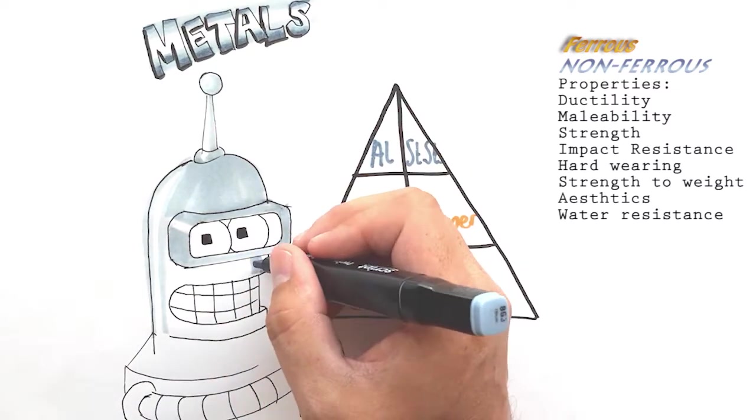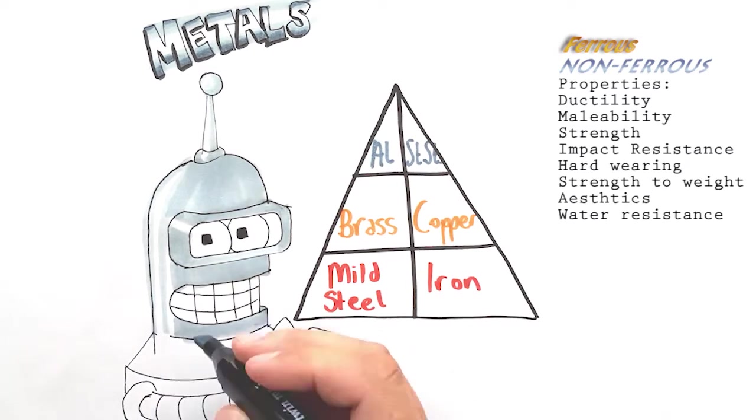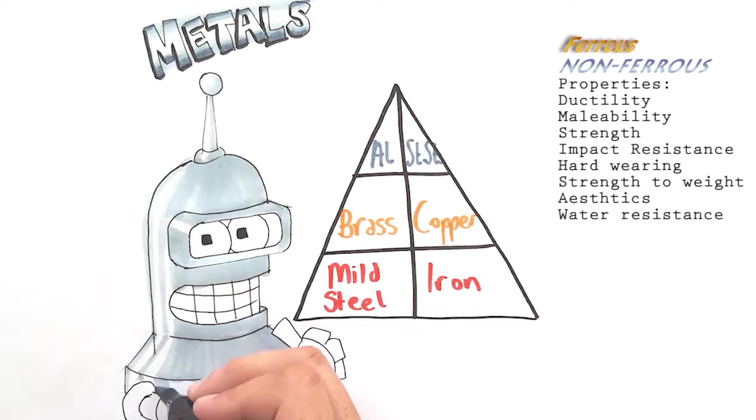Impact resistance on the other hand is its ability to take impacts as the name suggests. The ability for the metal to take hits without deforming.